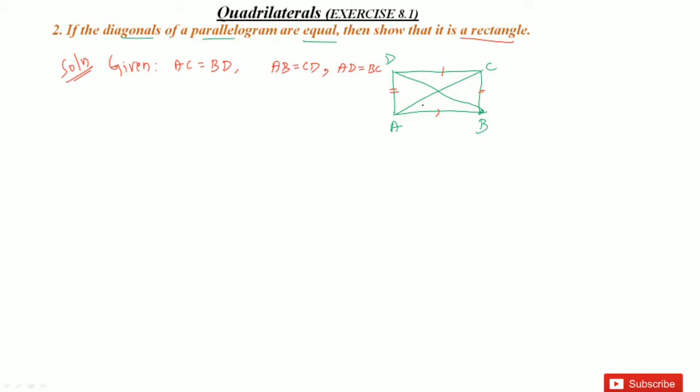But I'm going to use a congruent method so that I'm taking first two triangles. Triangle ABC I'm taking. And another triangle I'm taking, that is BAD. Then what are the sides will be equal? Here the side AD and BC will be equal. So I'm taking BC which is equal to AD. And this is given. This is given by the textbook.